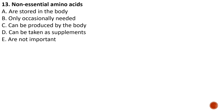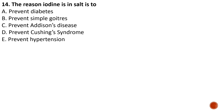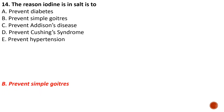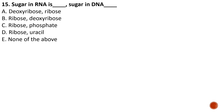Question number thirteen: non-essential amino acids are acids that can be synthesized or produced by the body, contrary to essential amino acids which cannot be produced by the body and need to be taken in as supplements. Question number fourteen: the reason iodine is added to salt is to prevent simple goiters, which is a swelling or increase in size of the thyroid gland in humans.